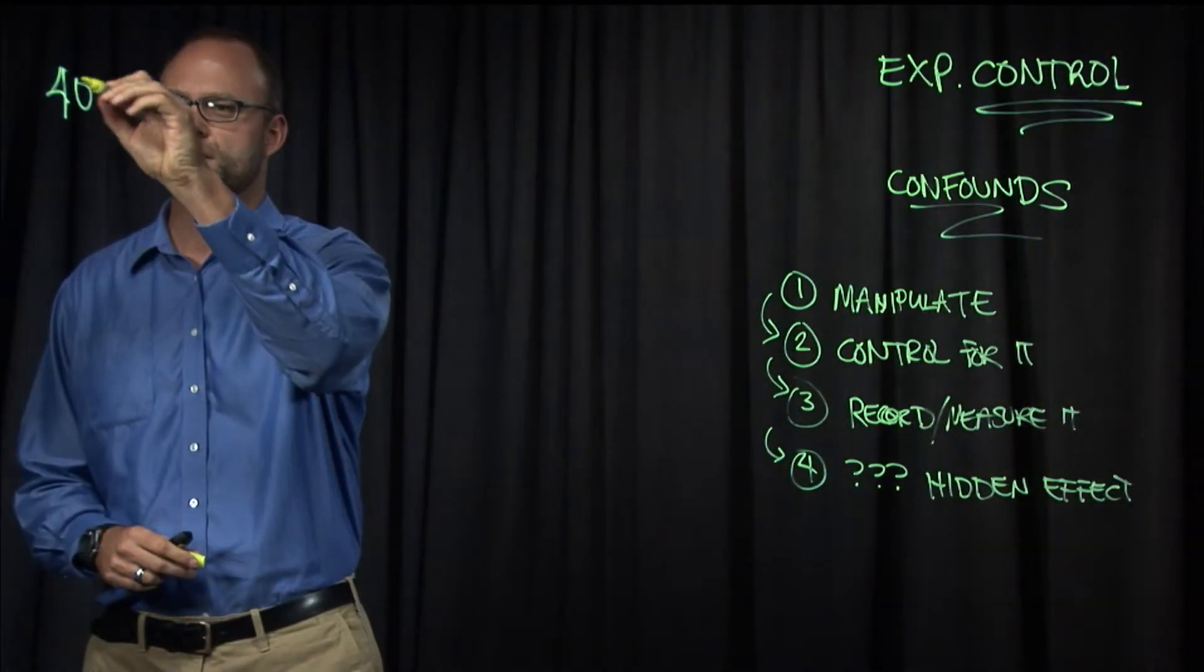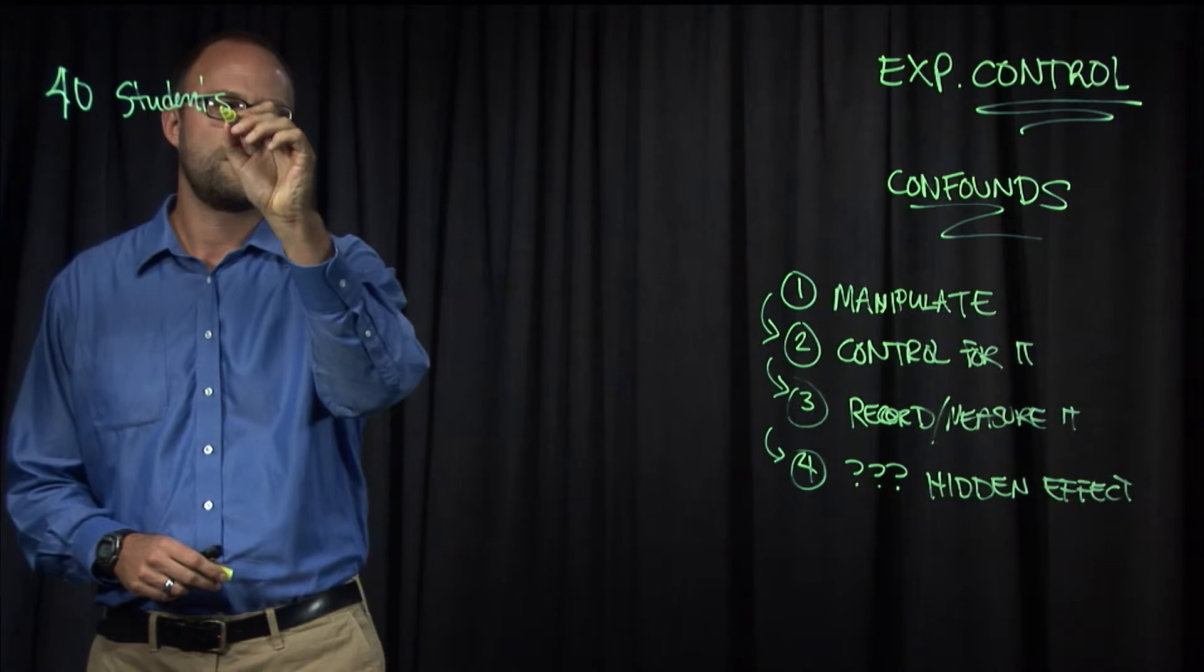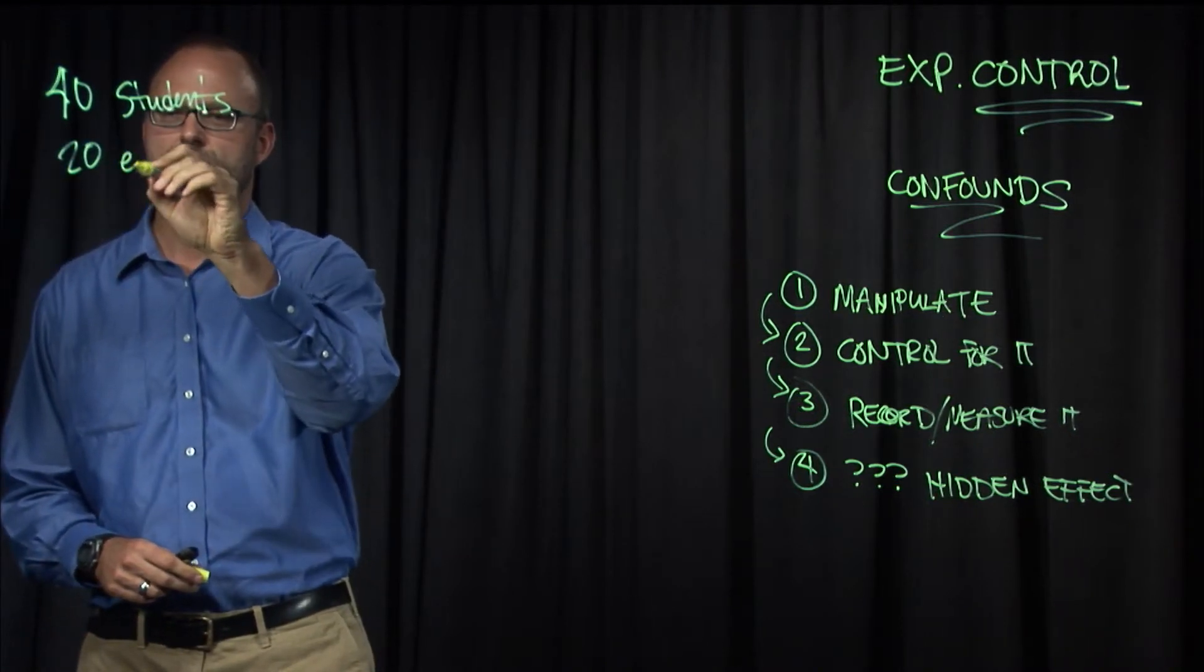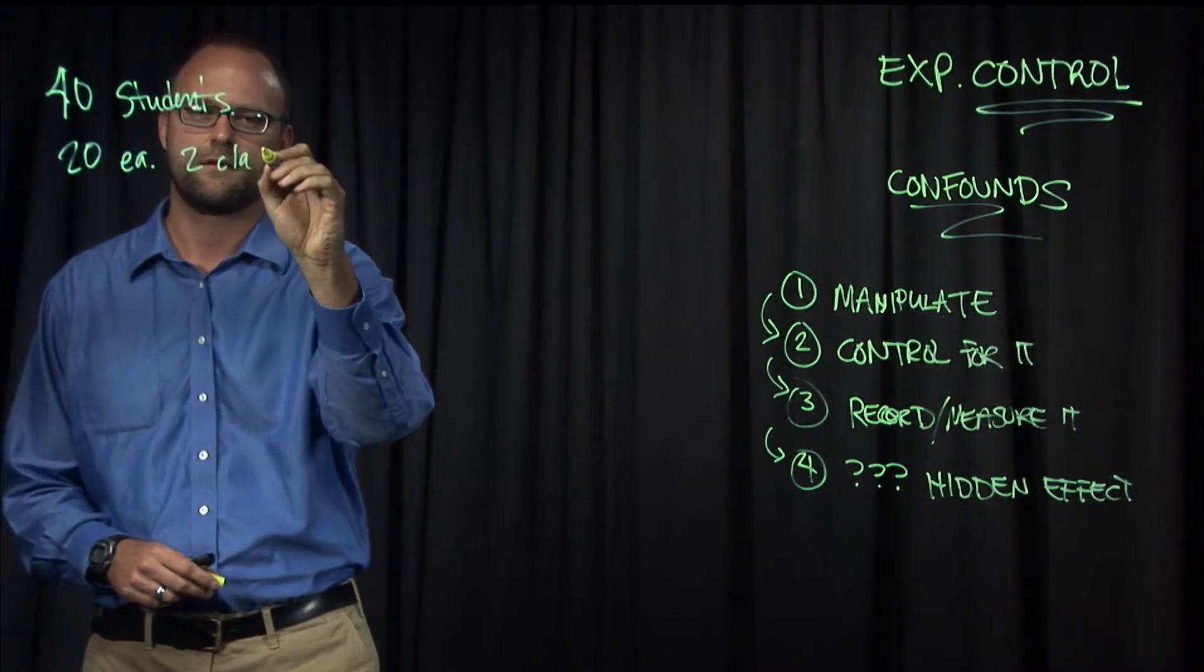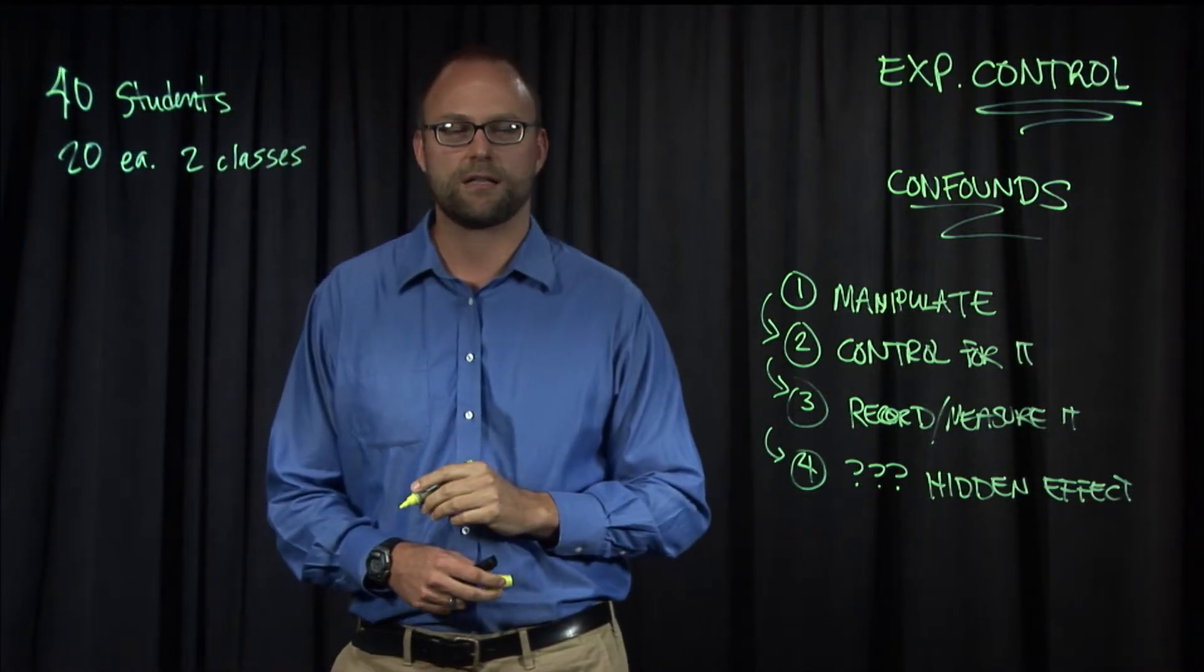A good thing to remember is experiments aren't just about recording numbers. Observe things qualitatively, take notes, and make your own conclusions about the kinds of behavior that you see. Qualitative observations are very powerful results from experiments, as well as quantitative data. So what's the formal design and analysis for this study? Well, as I said, we have 40 students, 20 each in two classes, and we'll add a third class of 20 others later.